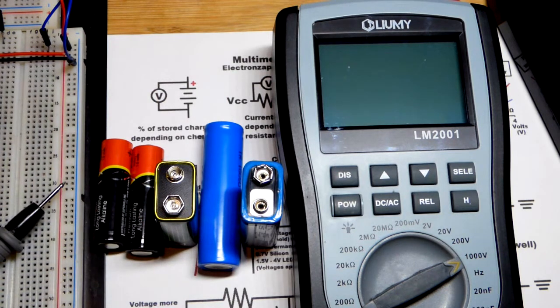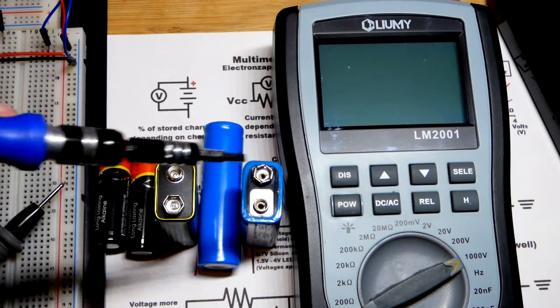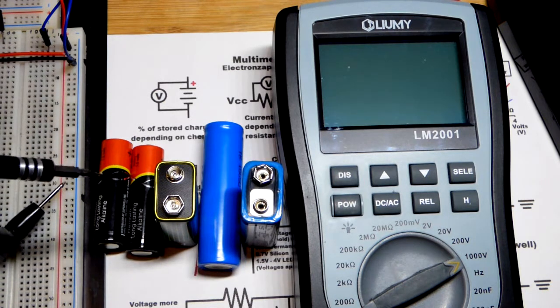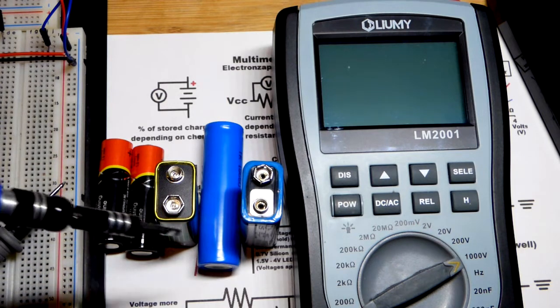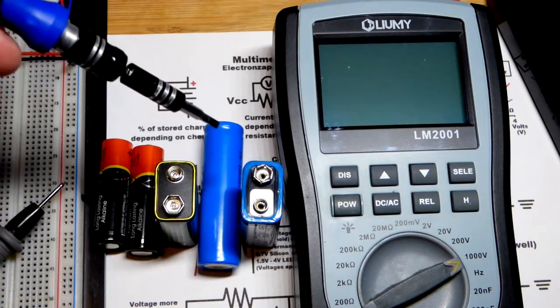Batteries have a changing voltage. When they're fully charged they have their maximum voltage, and as you use them their voltage goes down.